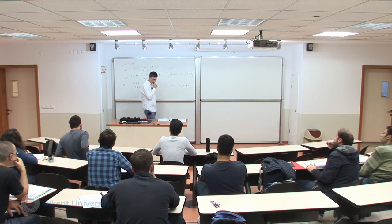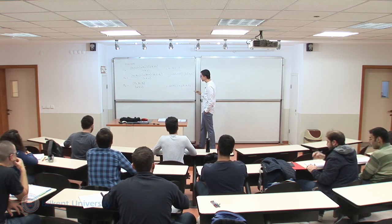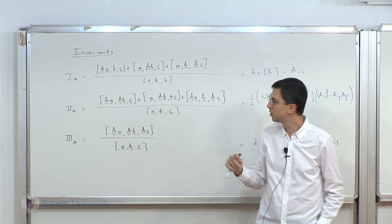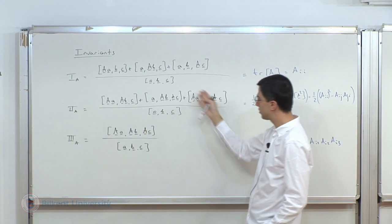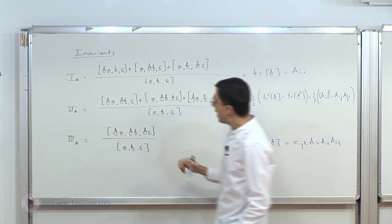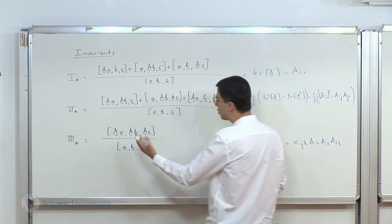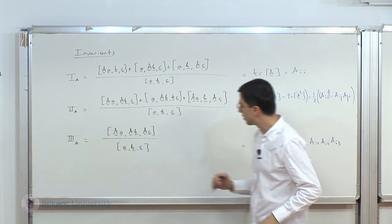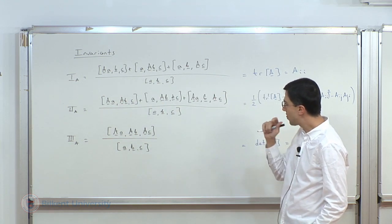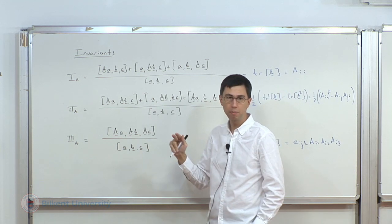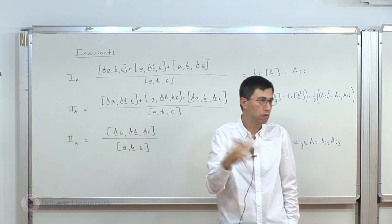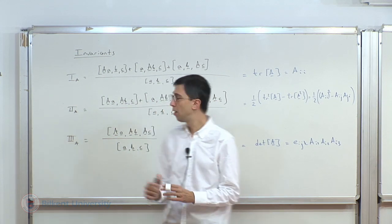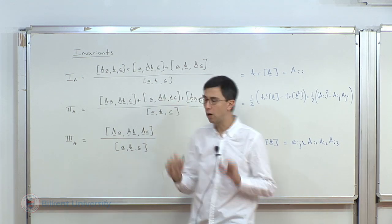Good morning. We're continuing from where we left off. The last thing we did was define invariants. We're assuming we're in 3D, and they're defined in terms of three arbitrarily chosen linearly independent vectors. Because they're linearly independent, the triple product is non-zero, so I can divide these quantities by the triple product. You notice the difference between the three invariants: two appearances of A, single appearance of A, and where A appears on every vector within the triple product. They're called invariants because irrespective of how you choose A, B, C, the final number that comes out is precisely the same.